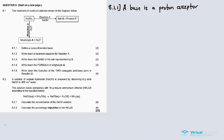8.1.2: Write down a balanced equation for reaction one. For reaction one, we have sulfuric acid, which is a strong acid, reacting with sodium hydroxide, which is a strong base. When a strong acid and a strong base react, they neutralize each other, meaning the pH is equal to seven.